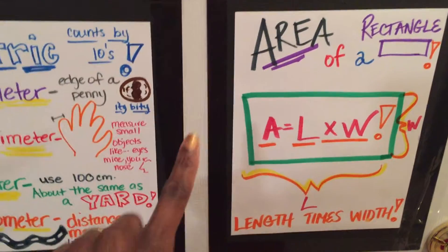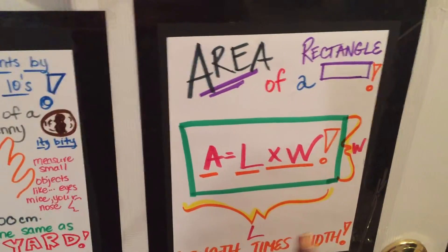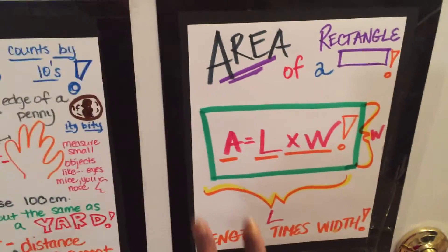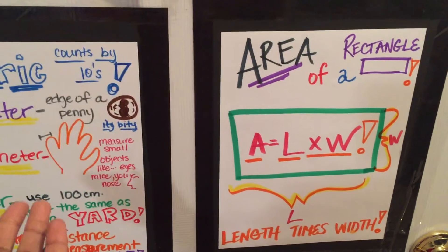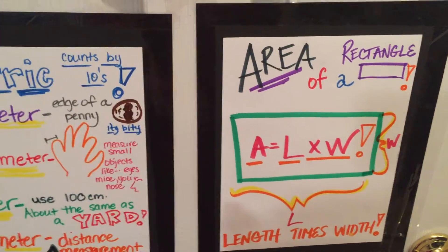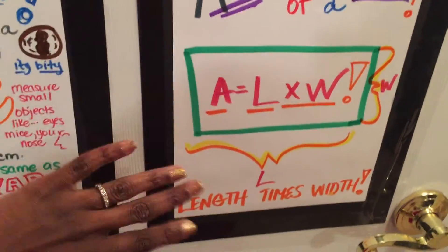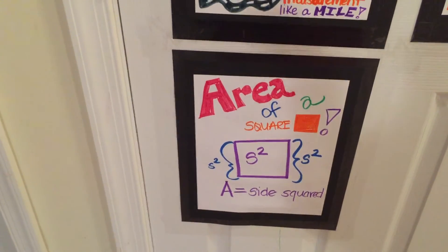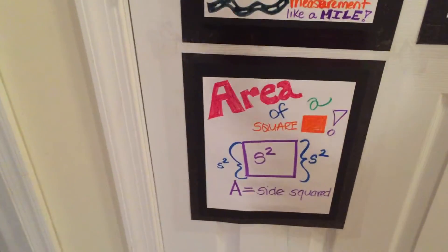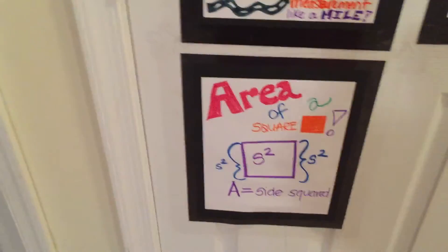Area of a rectangle equals length times width. I show him the rectangle — this is L for length, this is W for width. And then we get out the abacus and I create a few rectangles and say, okay, the length is five, the width is two. And we work it out on the abacus because he sees this and he wants to do it and practice it more. Area of a square equals side squared — I explained to him what squared means. Again, we broke out the abacus and we did some examples.